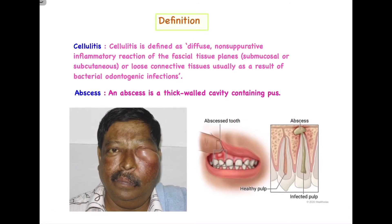The first differentiating point between cellulitis and abscess is the definition itself. Cellulitis is defined as a diffuse, non-suppurative, and inflammatory reaction of the facial tissue planes. The key words to remember are: diffuse, meaning it is not localized but spread to distant places; non-suppurative, meaning there is no pus formation; and it is a typical inflammatory reaction involving all inflammatory cells and their byproducts.